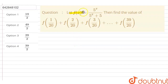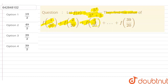In this question, we have this f of x. This is a function: 5 raised to the power x, divided by 5 raised to the power x plus 5. We have to find the value of f(1/20) + f(2/20) + f(3/20), and this goes up to f(39/20). We have four options: option 1, option 2, option 3, and option 4.